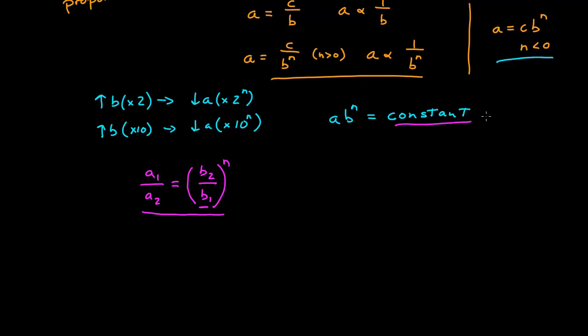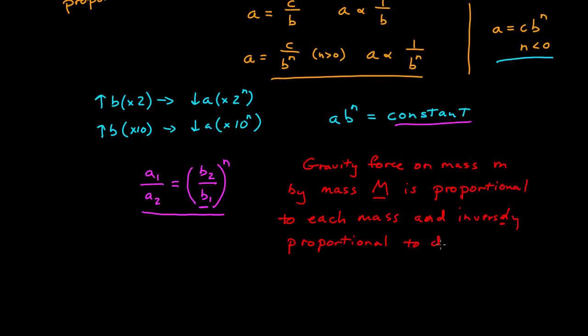For an example, let's use Newton's law of universal gravity. Newton's law of universal gravity says that the gravitational force on a mass m by a mass capital M is proportional to each mass and inversely proportional to the distance squared. I'll call r the distance between them.